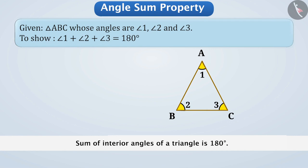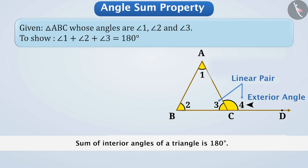In order to show that, we will extend the side BC passing through point D. By doing so, we will get an exterior angle of triangle ABC, which is angle ACD. Let us call it angle 4. We can see that angle 3 and angle 4 form a linear pair, which means angle 3 plus angle 4 is equal to 180 degrees.